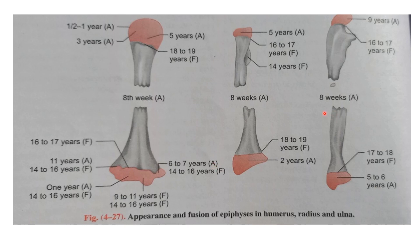We will be focusing on the radius and ulna. The secondary center of ossification in the head of radius comes at five years of age, whereas in the base of the radius it comes at two years of age. In the ulna, it comes at nine years of age at the head, and the base comes at five to six years of age. To remember: head of radius and base of ulna are both five-five, and you also need to remember nine and two. Both the lower ends of radius and ulna fuse at 18 to 19 years of age.